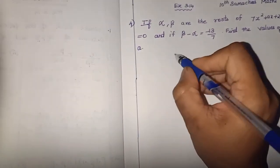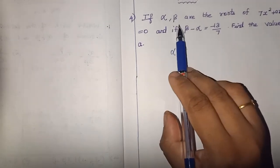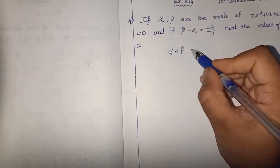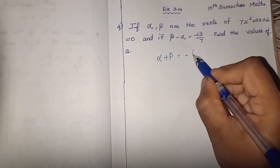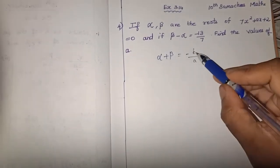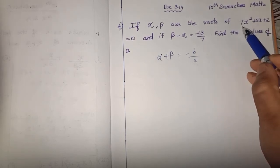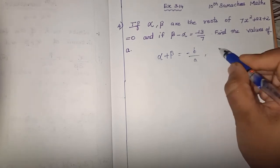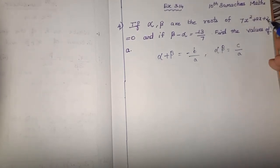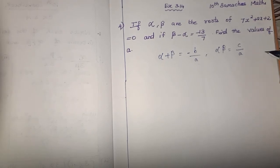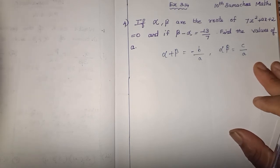The sum of roots formula: alpha plus beta is equal to minus B by A, where B is the coefficient of x and A is the coefficient of x squared. The product of roots formula: alpha times beta is equal to C by A, where C is the constant and A is the coefficient of x squared. This is the relation between roots and coefficients of the quadratic equation.